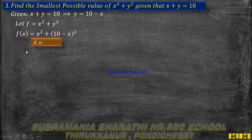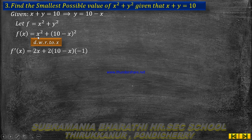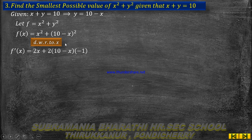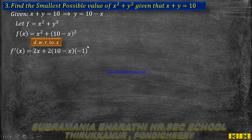Now differentiate the function. f dash of x: differentiate x squared to get 2x, plus differentiate (10 minus x) whole squared using the chain rule: 2 into (10 minus x), then differentiate (10 minus x) — the derivative of 10 is 0, derivative of x is 1, so we get minus 1.